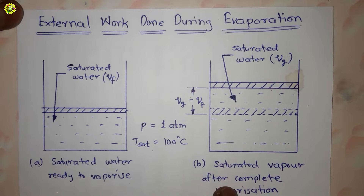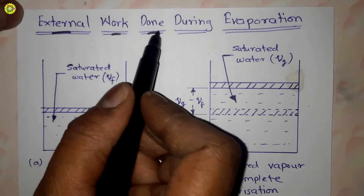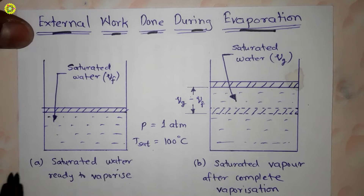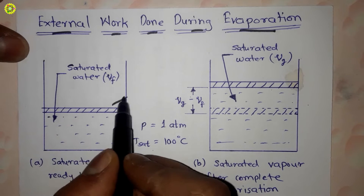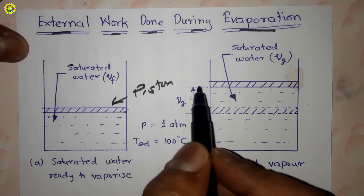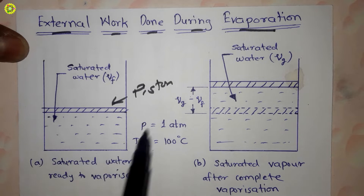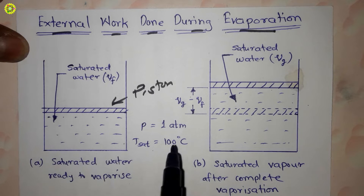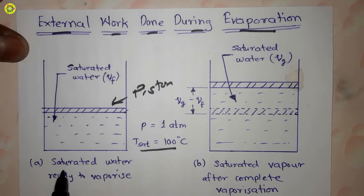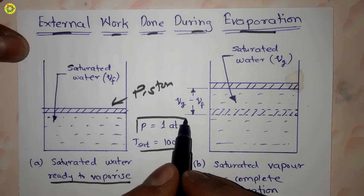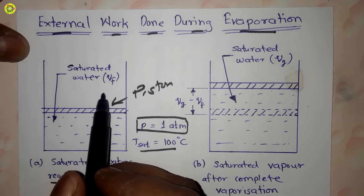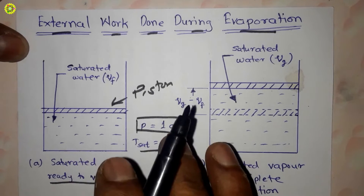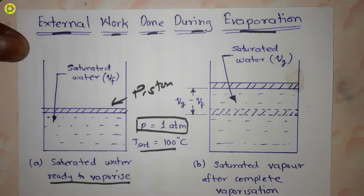In this video we will study about external work done during evaporation. Here we have a container with water and a piston. This water, which is saturated water, is at 100 degrees Celsius and is ready to vaporize. It is at one atmospheric pressure and its specific volume is vf, which stands for specific volume of moisture or water. This is our first case: saturated water ready to vaporize.